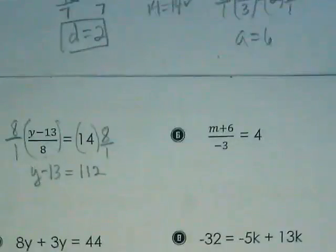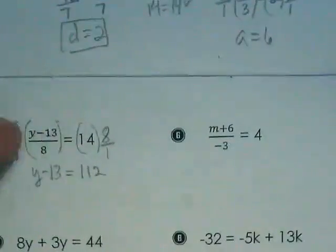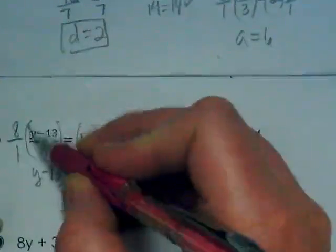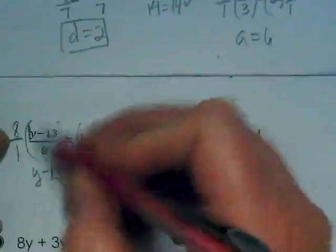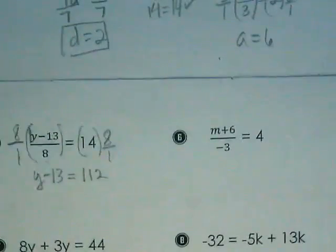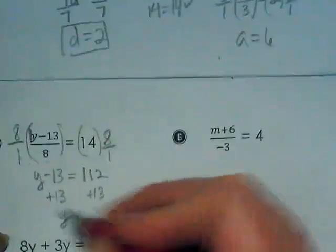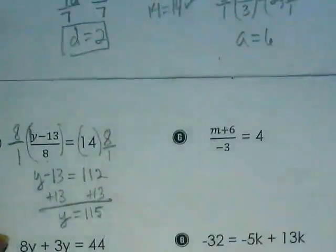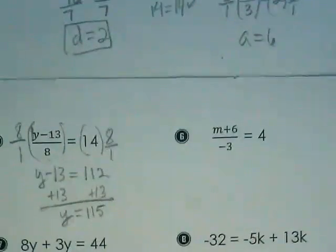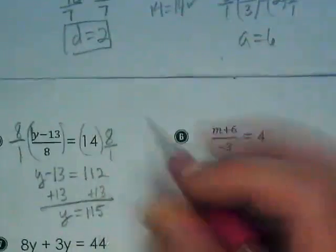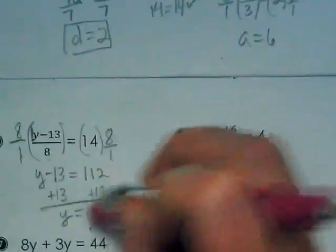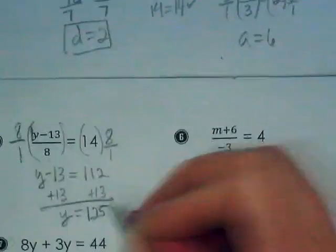Because I'm not multiplying this times what's in here. I'm multiplying this 8 over 1 by this 1 over 8, and that's what this whole fraction is. It's not distributive property. We're doing a reciprocal. We're going to add the 13 to both sides, and we get y is equal to 115. I mean 125, thank you. I got distracted by outside noise and stopped thinking.